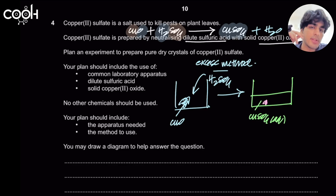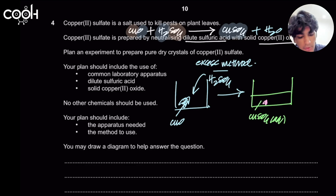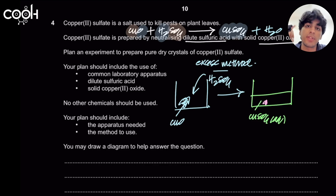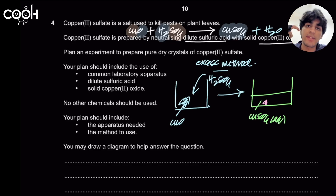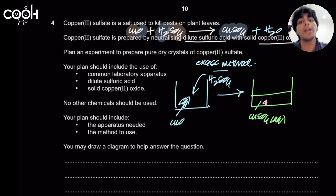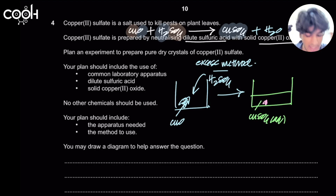You might wonder why we use copper oxide and not copper metal. You cannot use copper metal because copper is less reactive than hydrogen, so it cannot displace hydrogen from the acid. Metals below hydrogen in the reactivity series cannot be used in the preparation of soluble salts this way. You must perform an acid-base reaction using the oxide, hydroxide, or carbonate. You could use copper oxide, copper hydroxide, or copper carbonate — but not copper metal.